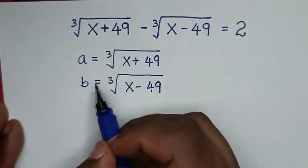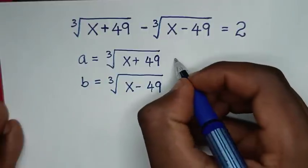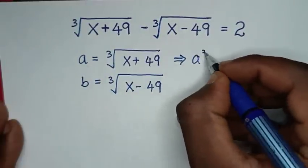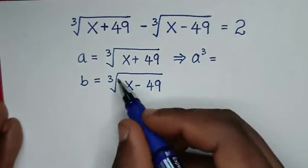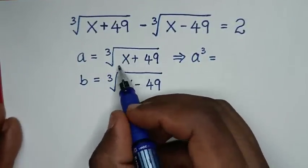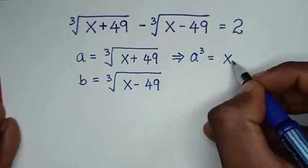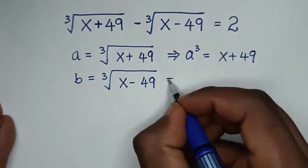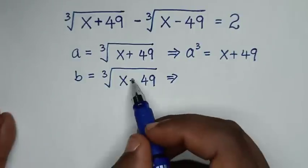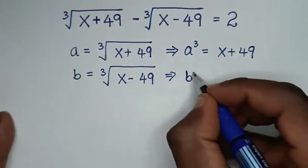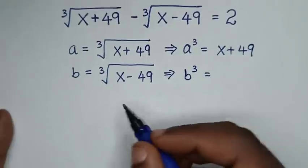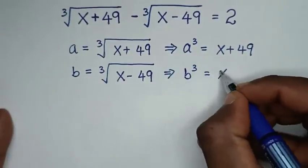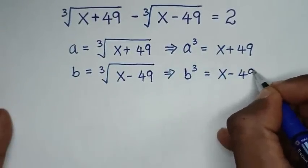To remove the cube roots, we will raise both sides to the power of 3. So from the first equation, a cubed equals x plus 49. And from the second equation, b cubed equals x minus 49.